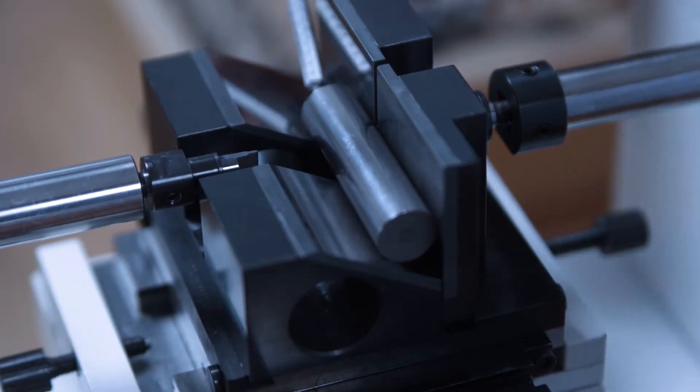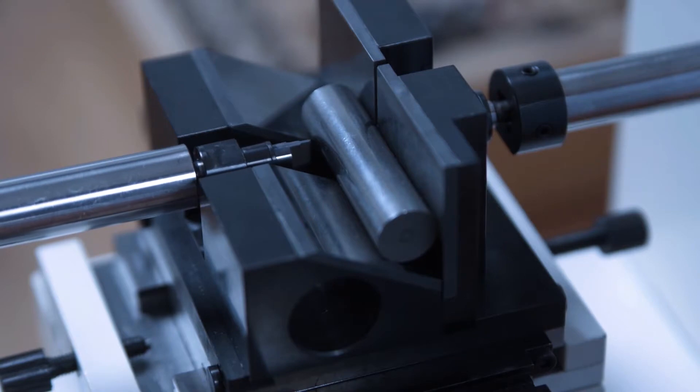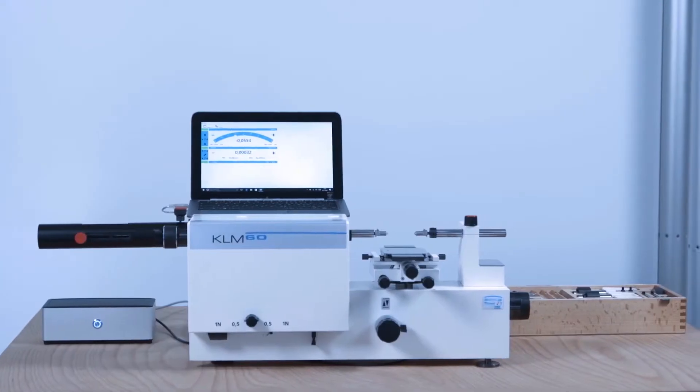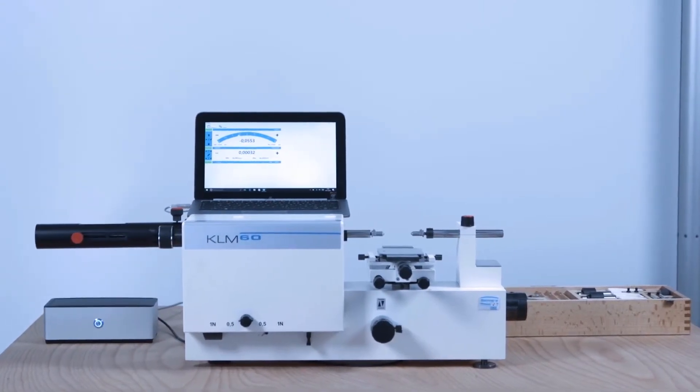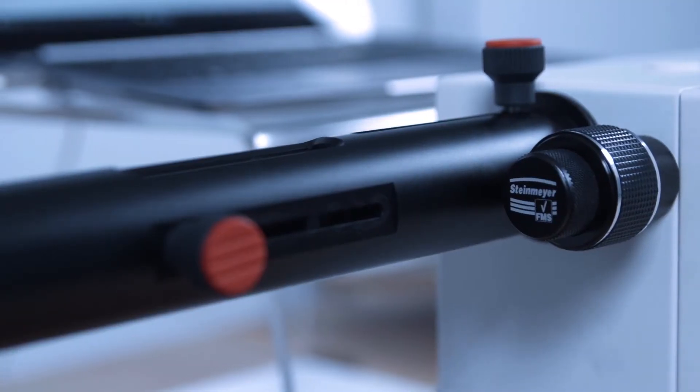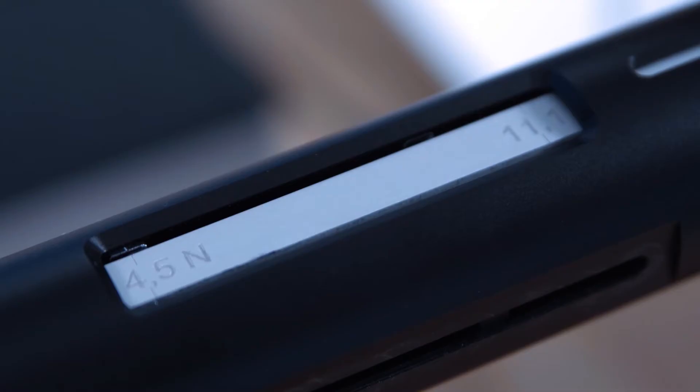Further, optional accessories include pivoted stages, quick action clamping elements, or sets for thread measurements. These greatly extend the range of applications and allow easier and more economical calibrations.